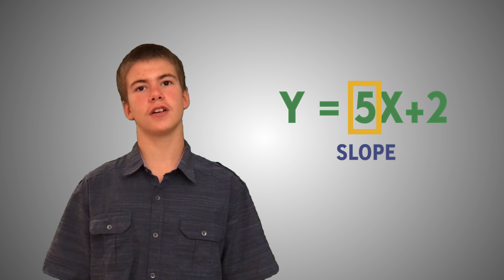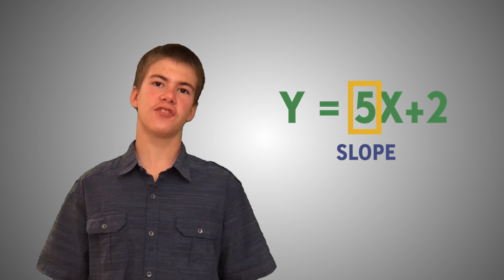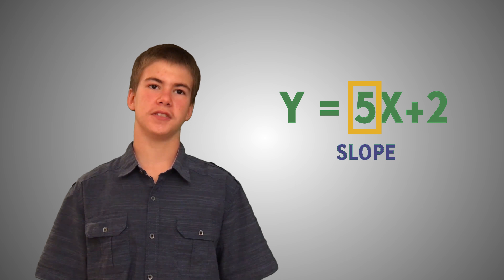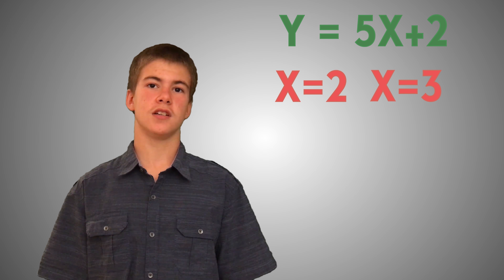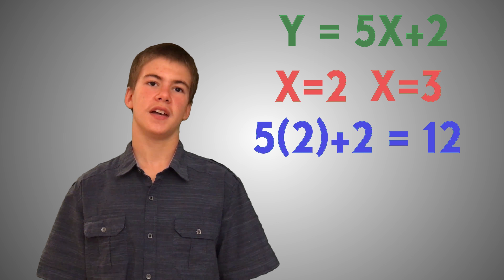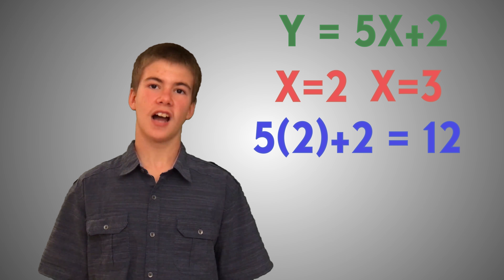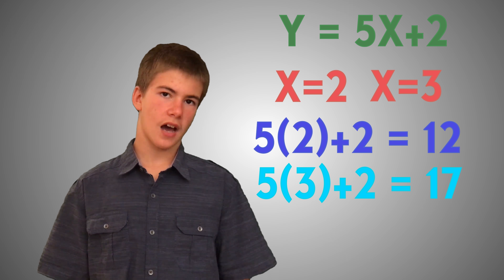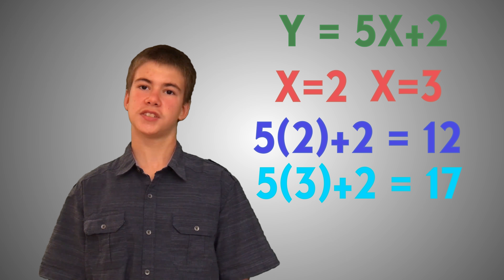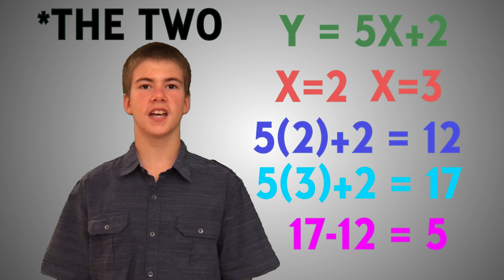Let's take a look at a simple example in which we calculate the slope of a line. Let's say this line had an equation of y equals 5x plus 2. You can easily tell that the slope is 5. We can pick some input values to plug in for x. Let's start with consecutive numbers such as 2 and 3. When we plug in 2, we see that 5 times 2 is 10, plus another 2 is 12. Next, let us substitute 3 for x: 5 times 3 is 15, plus 2 is 17. Then, when we subtract 2, we once again get 5.